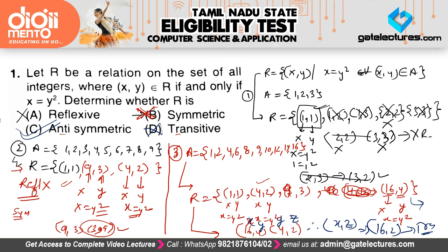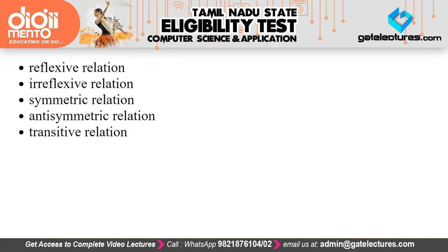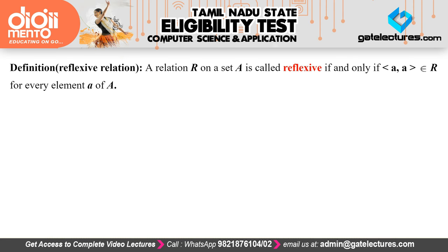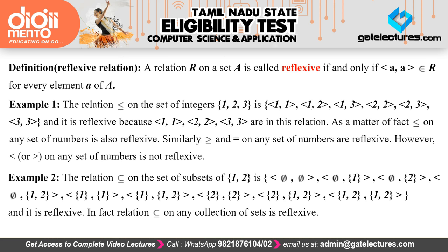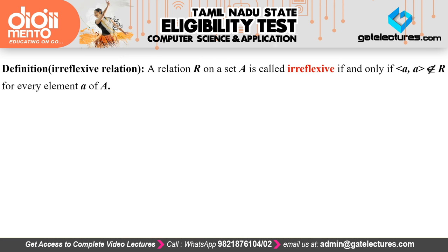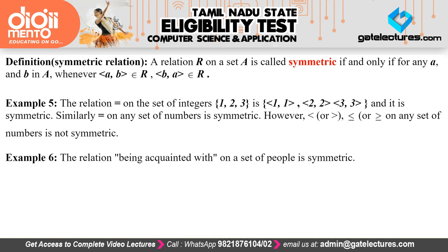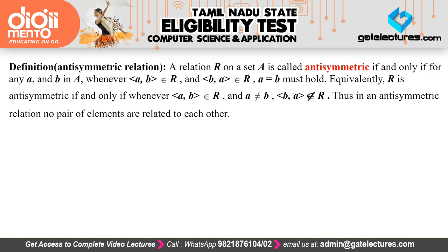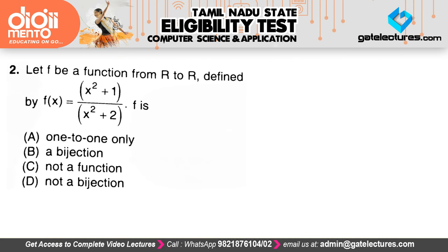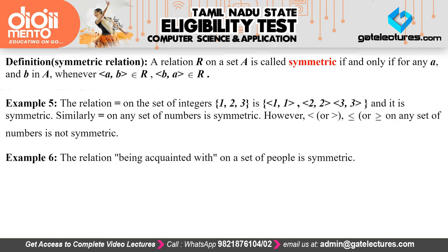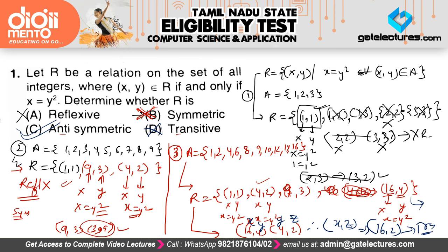I hope you understood this entire question. For complete details, I've taken small examples of all types of relations. I'm just flashing these definitions — reflexive, irreflexive, symmetric, anti-symmetric, and transitive — with examples for each. I'm not explaining them here because I've already created a dedicated video. You can pause and read the definitions of all these types.